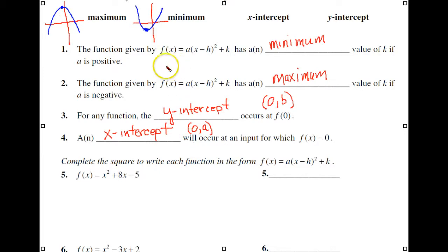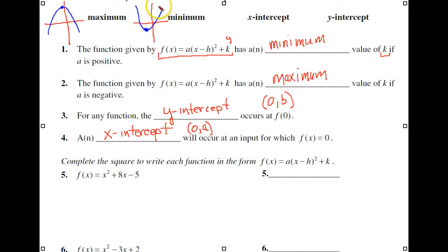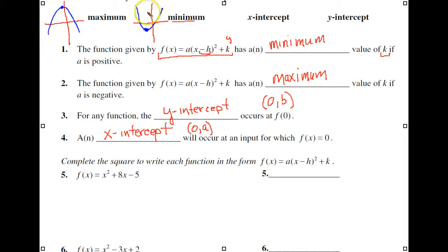They're giving us this special vertex formula. The value of k, which is actually our y-term, — if a is positive, our parabola is going to go upwards, and the value of y, which is this k, that's our minimum. So when a is positive, this k will be the minimum. And this h-value will actually be our axis of symmetry.